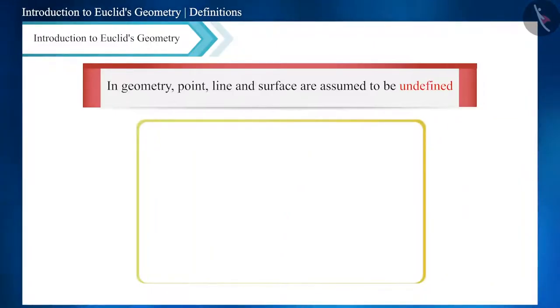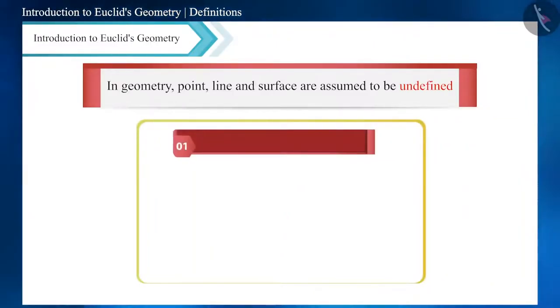Let's understand this. According to the first definition given by Euclid, a point is that which has no part. Here, he did not define part. If we define a part by the space it occupies,